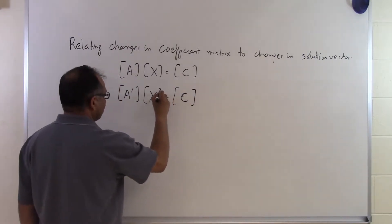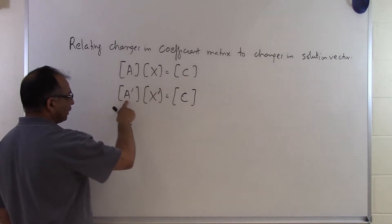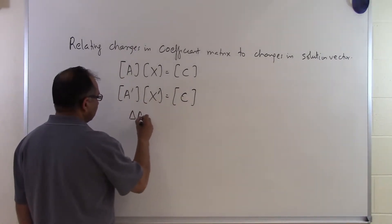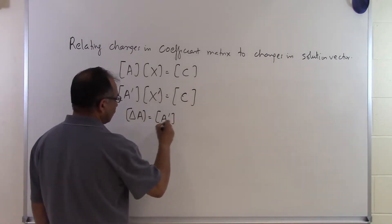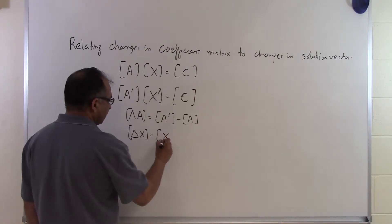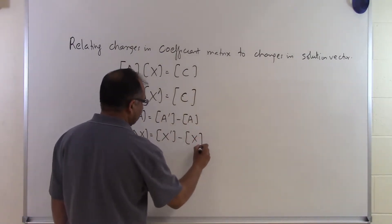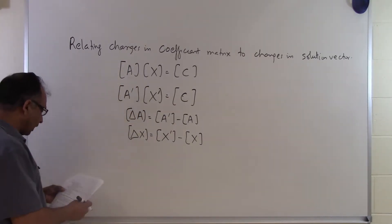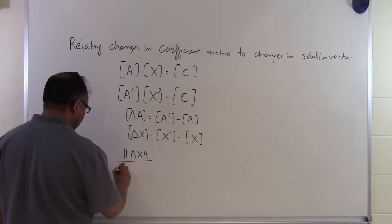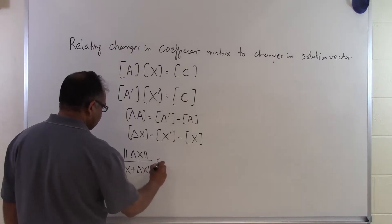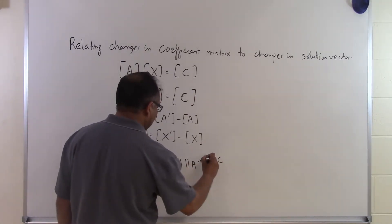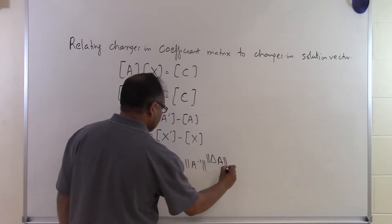If we change the coefficient matrix and keep the right hand side the same, we're going to get a different solution vector. If we define delta A as the changed coefficient matrix minus the original, and delta x as the difference between the new solution vector and the original, then there is a theorem: the norm of delta x divided by the norm of x plus delta x is less than or equal to the norm of A times the norm of A inverse times the norm of delta A divided by the norm of A.